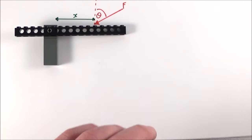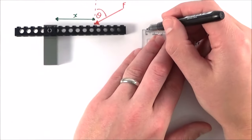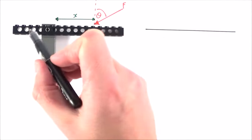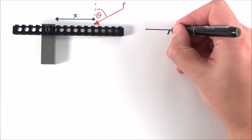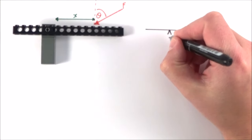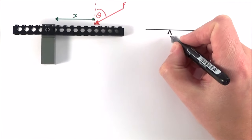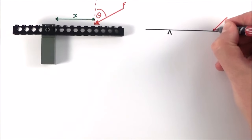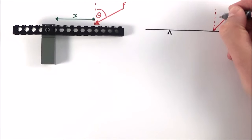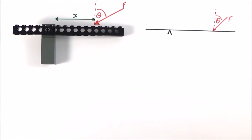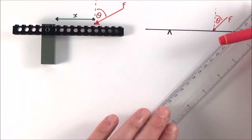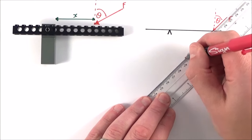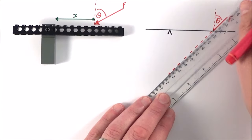Whatever you do, you must draw a diagram first. I'm going to represent the beam as a long straight line, with the pivot or fulcrum shown as a small triangle. I'll label the force as F acting at an angle of theta, and then I'll continue the direction of this force to show the line of action — the line along which the force is acting.